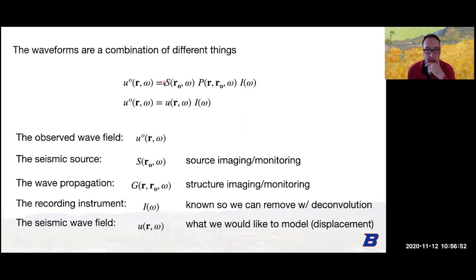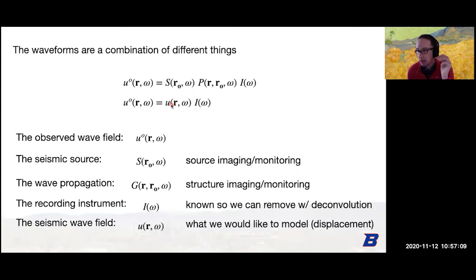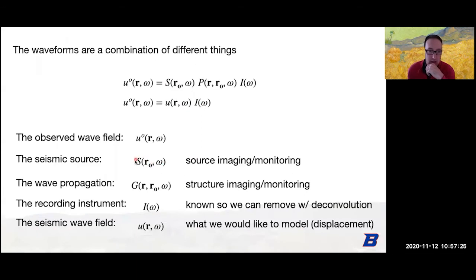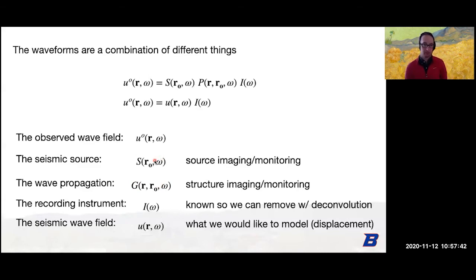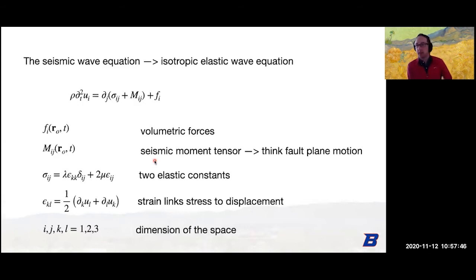We normally combine the Green's function with the source to write the actual wave field and then convolve it with the instrument response. What we want is to remove the instrument response from the observed wave field so we just have U — we do that through a process called deconvolution. This enables us to compare the wave field at different places on earth recorded by different instruments. Then we want to isolate S for source imaging and monitoring, or G for structure imaging and monitoring — G tells us about the velocity of the earth's crust, S tells us about the source.